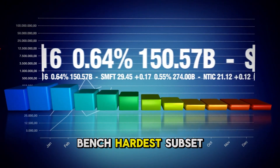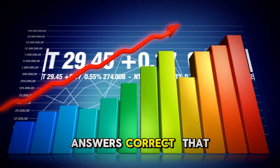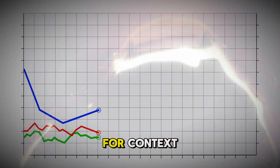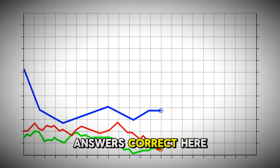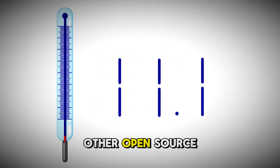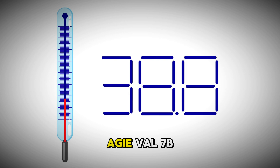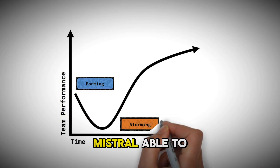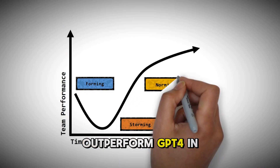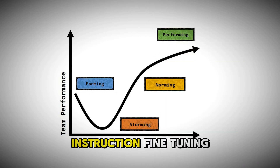BIG-BENCH HARD and HARDEST are subsets of BIG-BENCH that only include questions that were answered incorrectly by GPT-3.5 — so these are really hard tasks. On the BIG-BENCH HARDEST subset, MISTRAL-30B gets 69.8% of the answers correct. That is insane. For context, GPT-4 gets 45.7% of the answers correct here. Other open-source models perform much worse — for example, Alpaca-7B gets 37.8% of the answers correct. So, why is MISTRAL able to outperform GPT-4 in these zero-shot settings? This is likely due to the instruction fine-tuning.